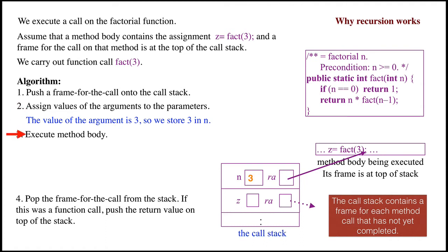Third, execute the method body using the frame for the call to access parameters and local variables. N is 3, so execution of the if statement does nothing.